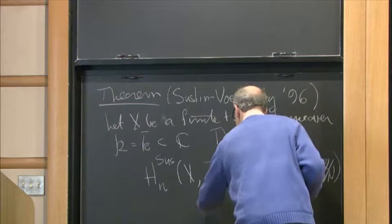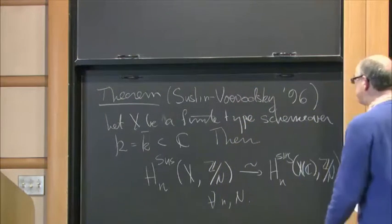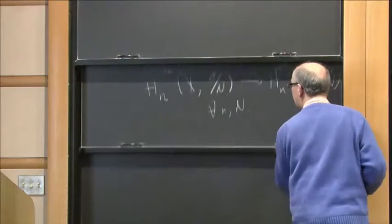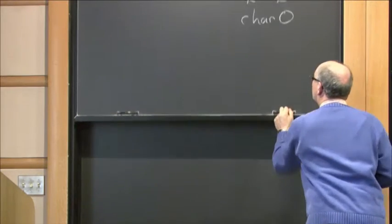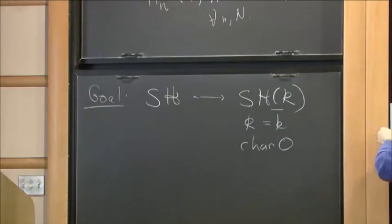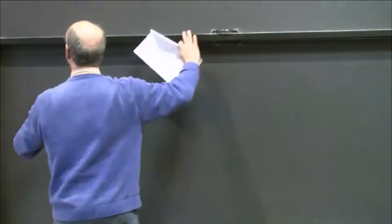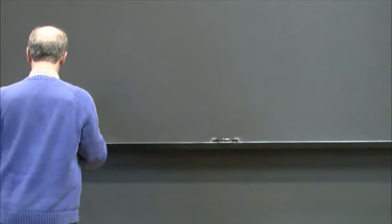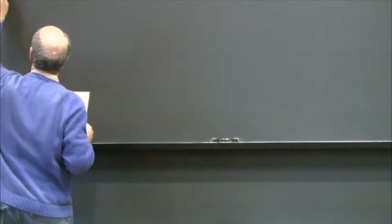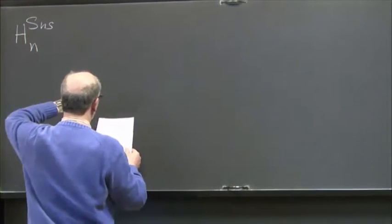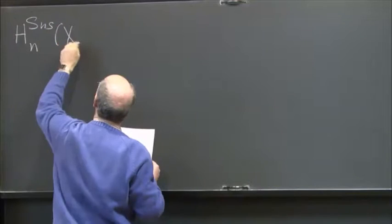Essentially the Betti realization gives an isomorphism between the mod N Suslin homology and the mod N singular homology of the complex points. This is for all N.